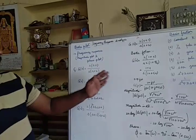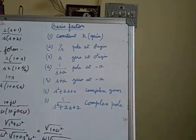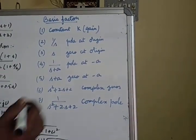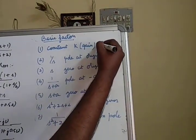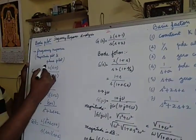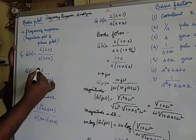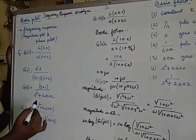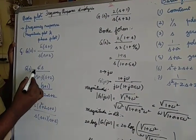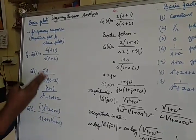Now we look at the basic factors. Any open loop transfer function has a constant gain. If you look at the first problem, the gain is 2. For the other problems the gain is 1, 1, and 4 respectively. So constant gain is one of the fundamental components present in any transfer function.